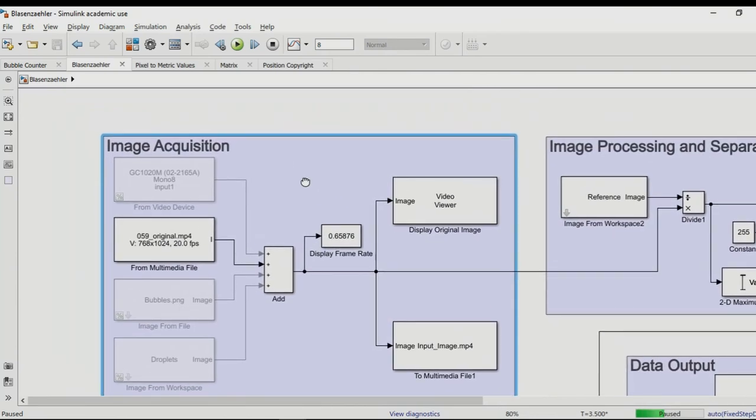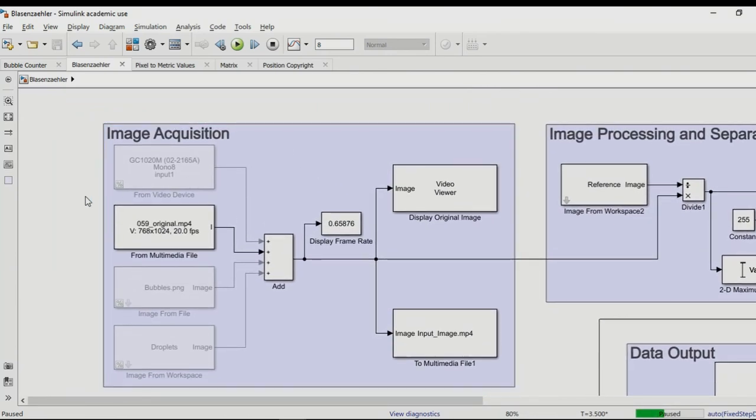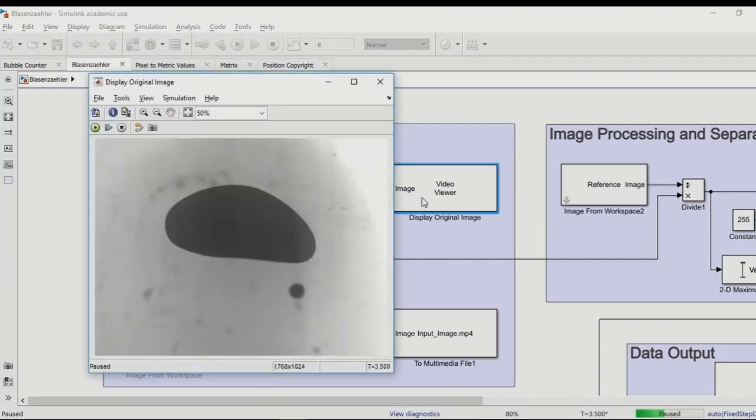The first area is called image acquisition. That's the area where we get our input data from, either from a camera device, a pre-recorded movie file, an image file from the drive, or from the MATLAB workspace. To inspect our input data, we are using the video view block. Here you can see an image right from the inside of the bubble column, with a big black bubble here and a smaller one here.